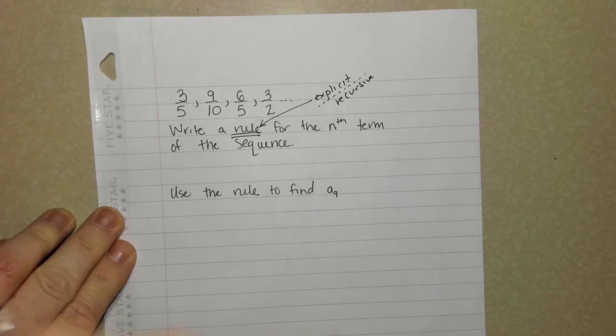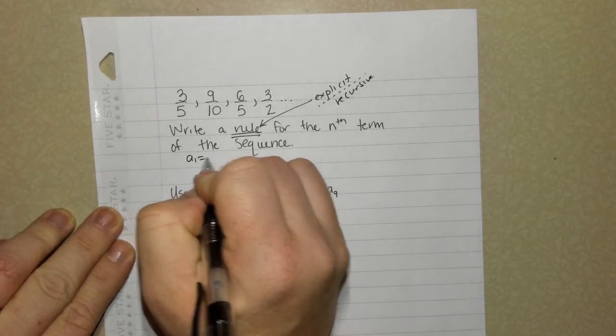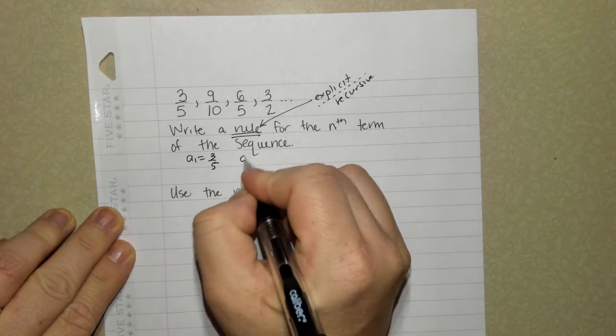So when you write explicit formula, there's two things you need to know. You need to know the first number in the sequence, and you need to know the common difference.